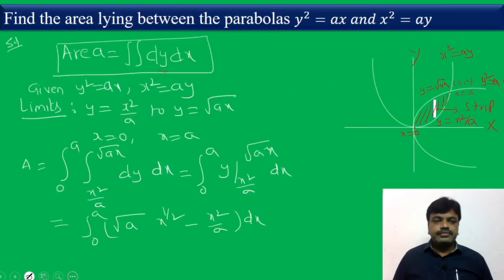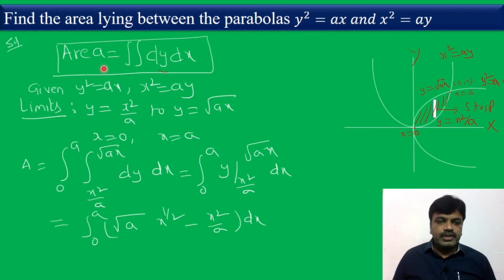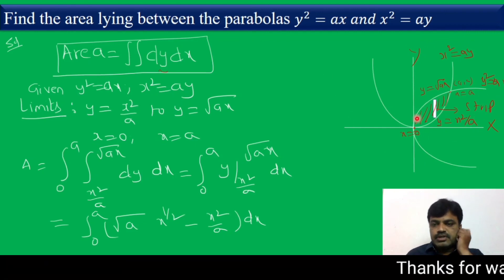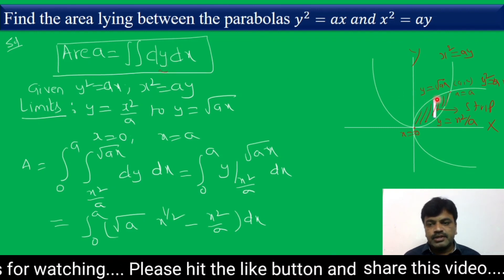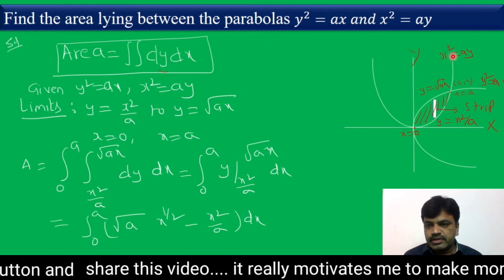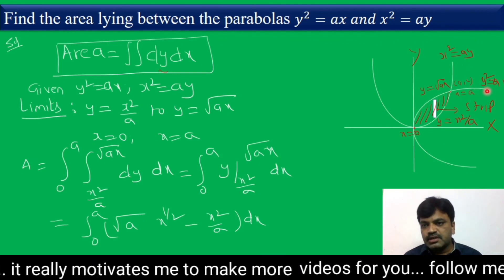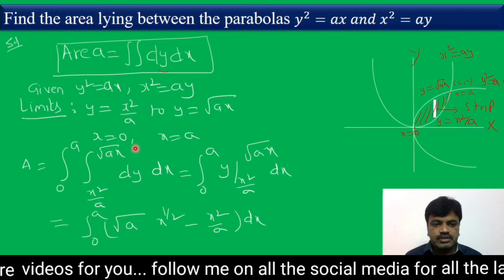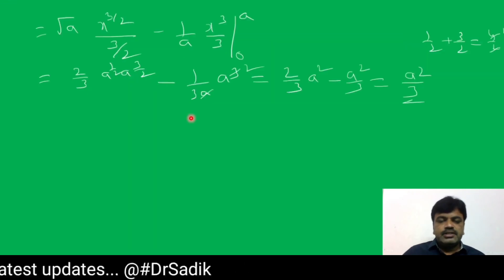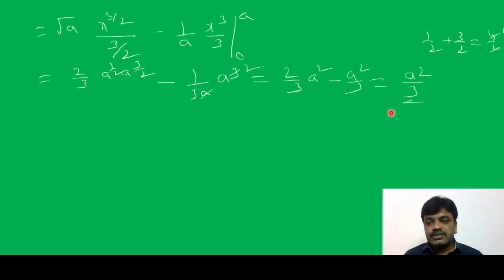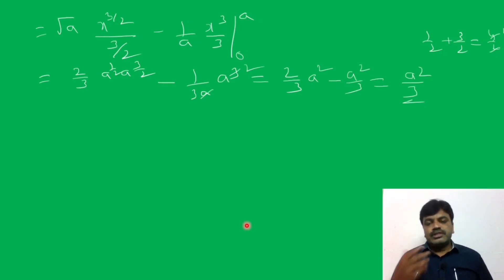This is the area of the region. To summarize: write the area formula as double integral dy dx, draw the curves geometrically, identify the bounded region, draw a vertical strip, set the lower limit as y = x²/A and upper limit as y = √(Ax), slide the strip from x = 0 to x = A, evaluate the integral, and we get the area of the bounded region as A²/3. Hope you understand. If you have any doubts, please comment in the comment box. Thank you for watching.